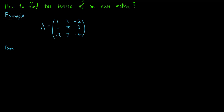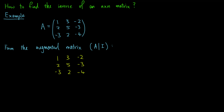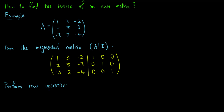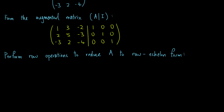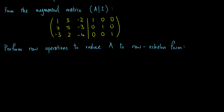We will first form an augmented matrix, which consists of the columns of A and the columns of the identity matrix. Then we will proceed to perform row operations to reduce A to row echelon form.